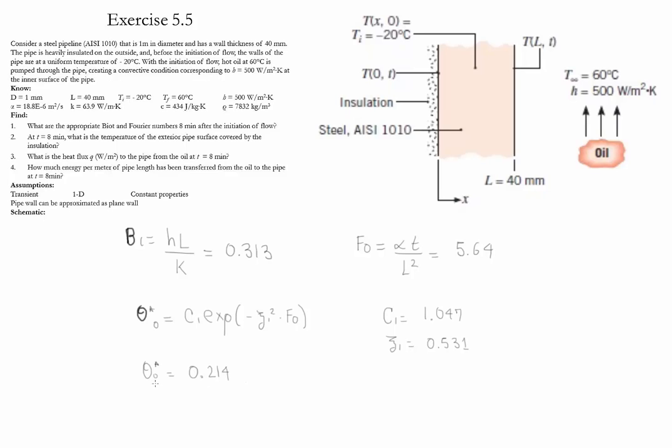The value of zero for a plane indicates where the location of the insulation takes place. Defining theta star zero to equal T0 minus T infinity divided by Ti minus T infinity, we find that the value of T0 equals 42.9 Celsius.